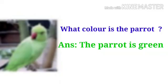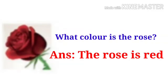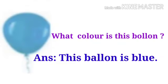Now look at the picture. What color is the parrot? Green. The parrot is green. What color is the rose? Red. This rose is red. Next, what color is this balloon? Blue. This balloon is blue. Blue manje nira.